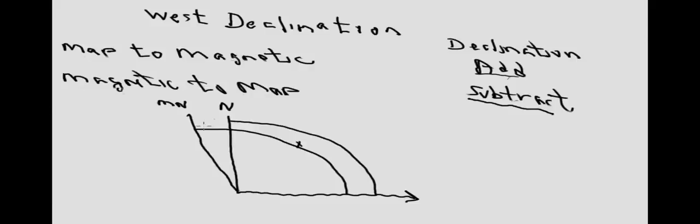That's all there is to west declination. I suggest if you live in an area of west declination, just learn this and learn this well. After just a short while, this will become second nature to you, and you'll be correcting your compass for declination with no problem. Then if you go to an area of east declination, just do the opposite of what you normally do. And by then, you'll know so well what you normally do that doing the opposite will be no problem.